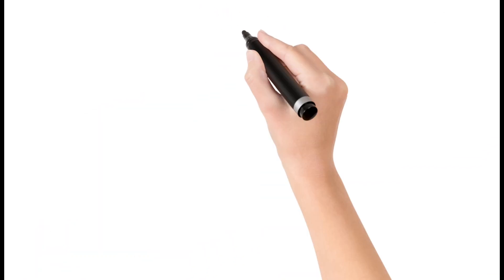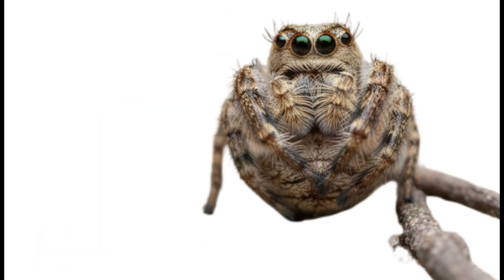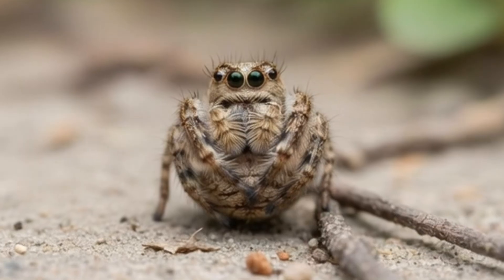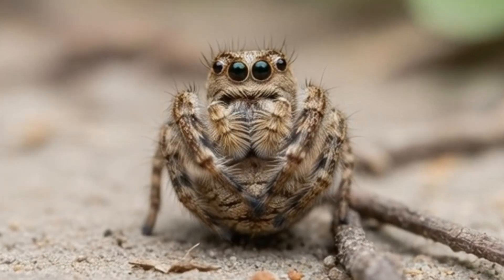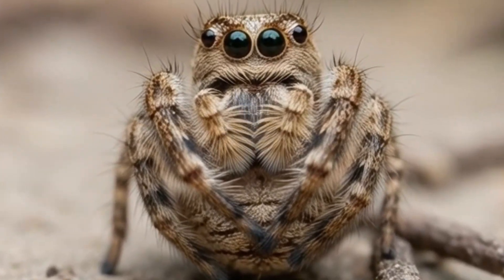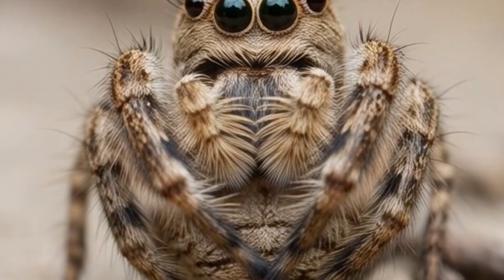Spider. A spider is not an insect but an arachnid. It has eight legs and no wings. Spiders catch prey using webs. They help control insect populations.